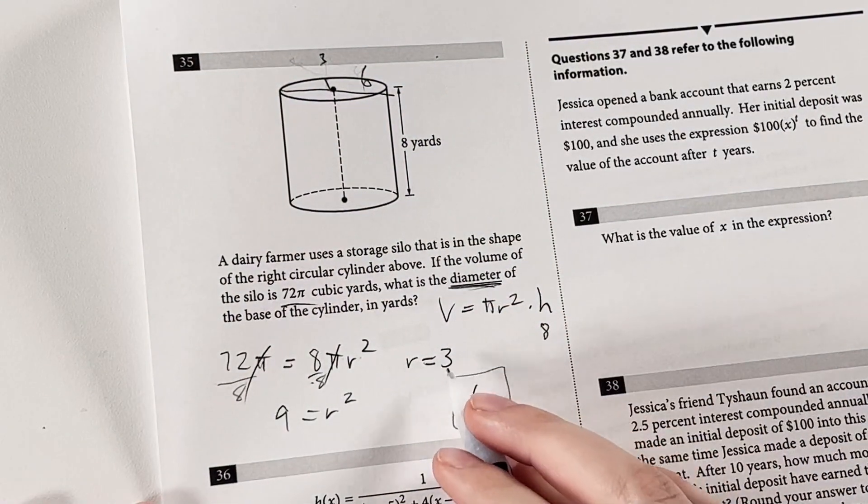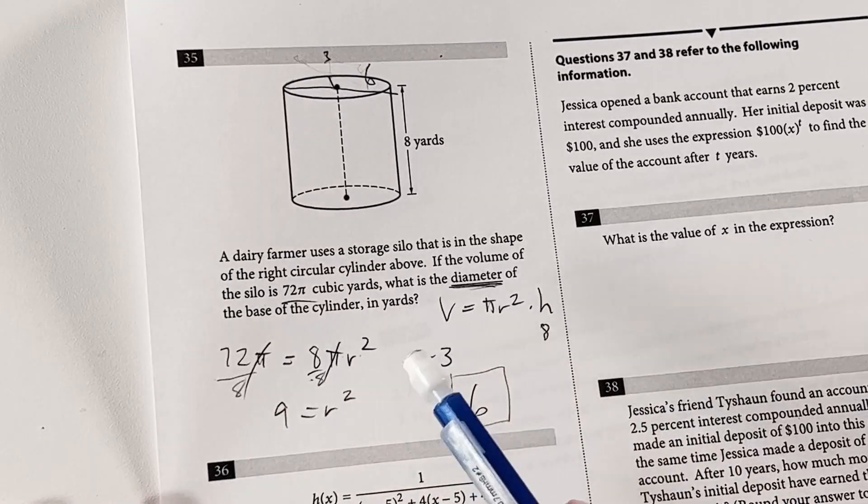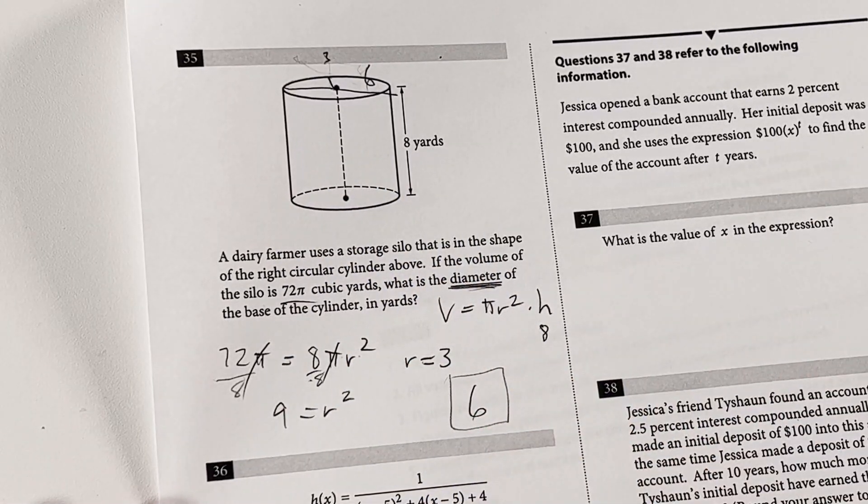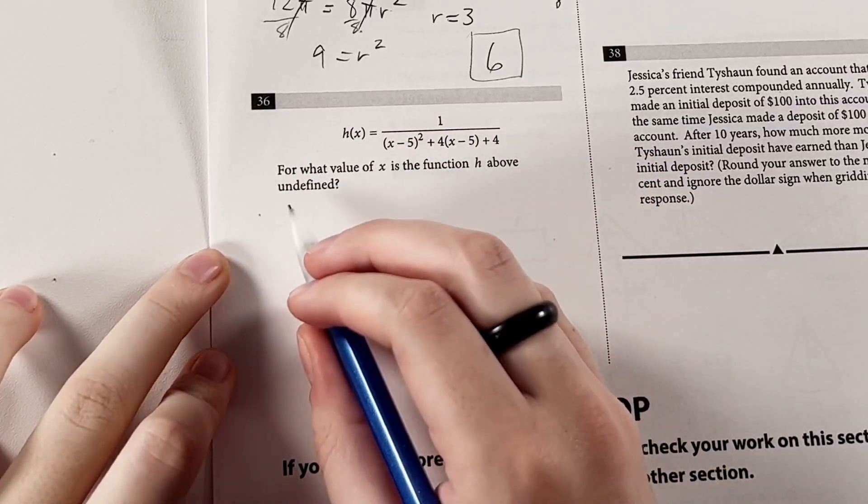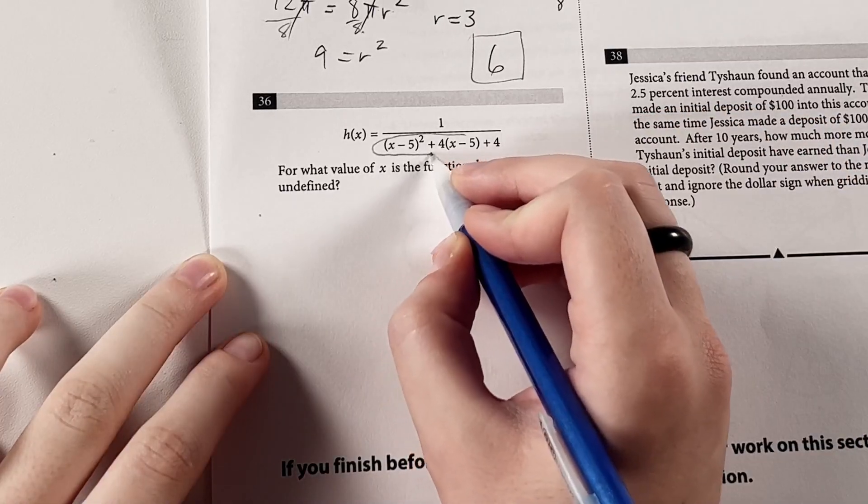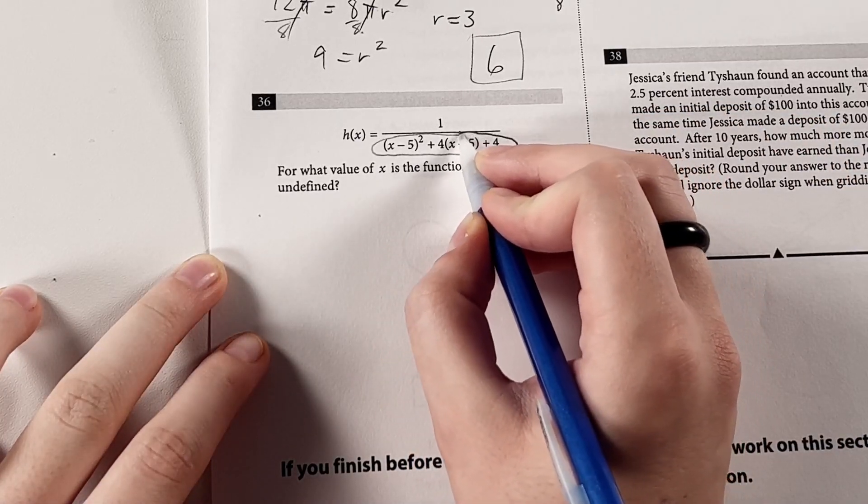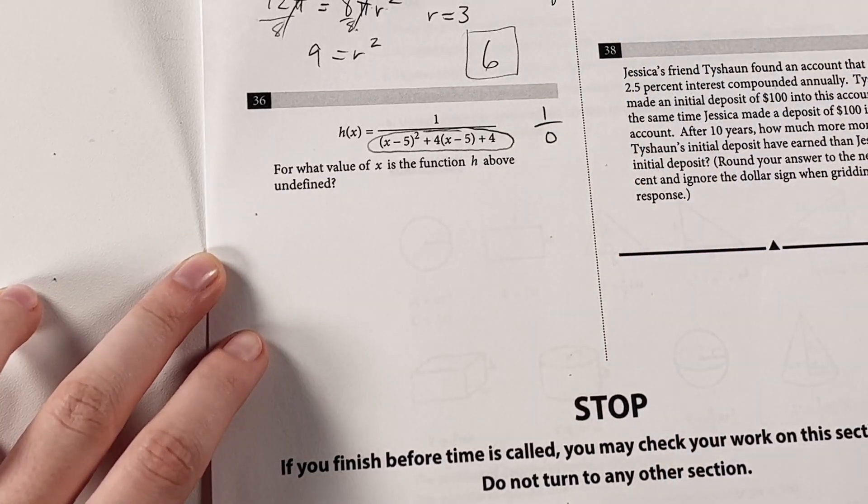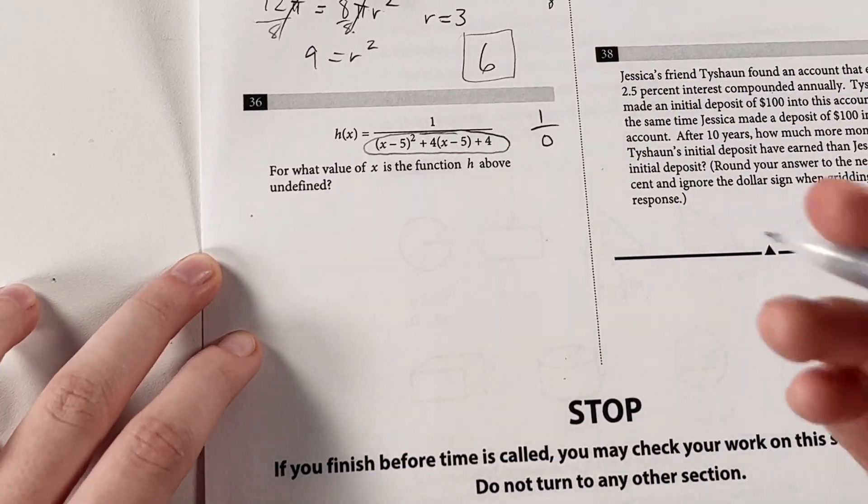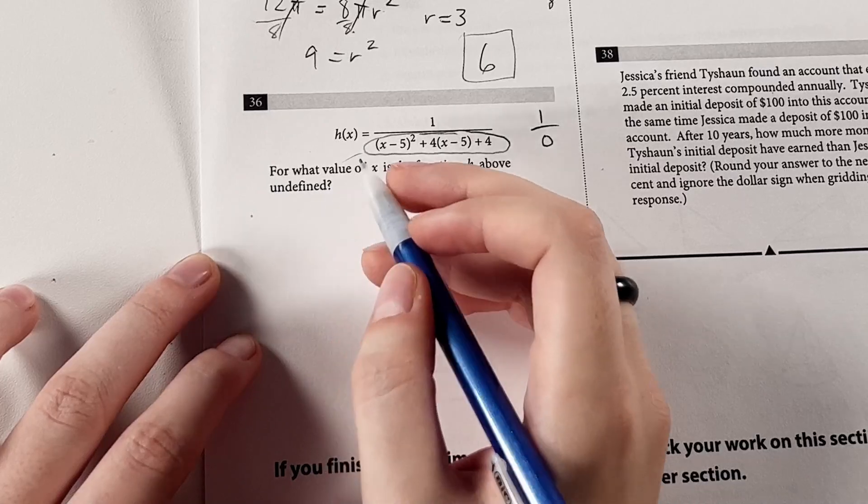And to check yourself, maybe just plug in this radius to the volume equation and verify that you get 72 pi cubic yards as your volume. Now for what value of x is the function h above undefined? So when you see something like this, the first main way I think of making this undefined is making this bottom 0. So if we had a 1 over 0, that would be undefined. So what happens if we just set this denominator equal to 0 like that? Now we can solve for x here.